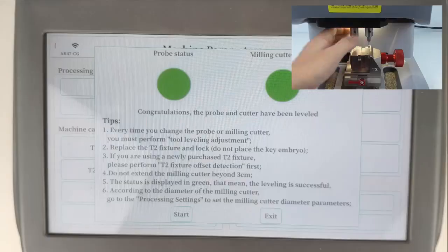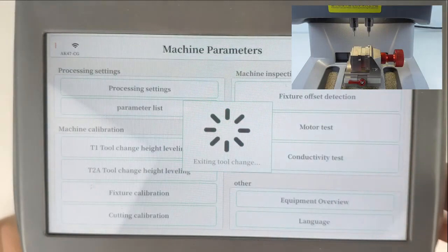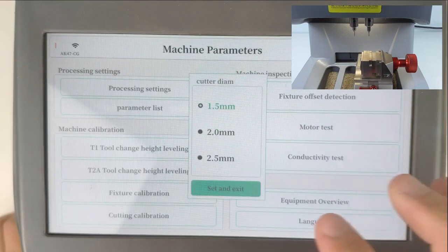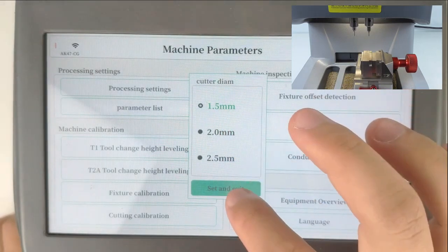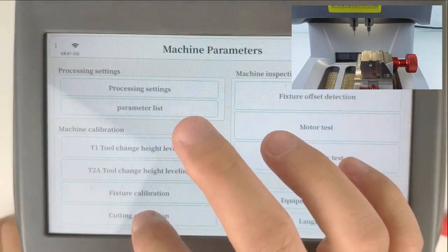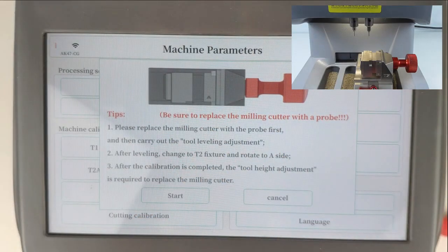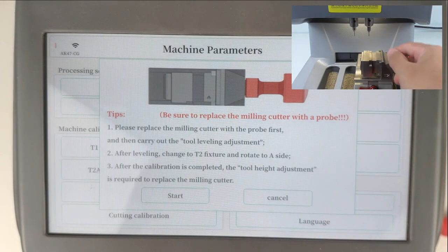Okay, it is greener. Exact. Then here 1.5, set on exact. Okay, cutting calibration, we need to make our teeth further inside here, then click start cutting calibration here.